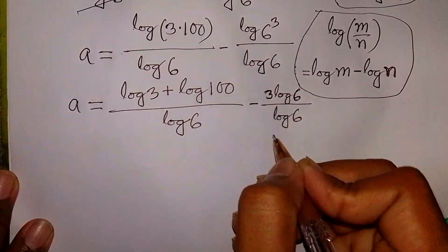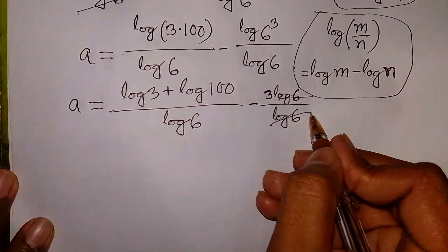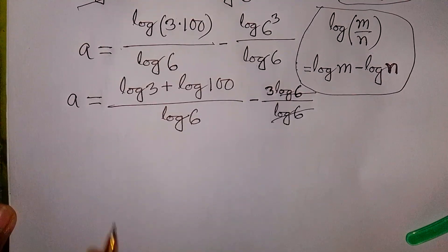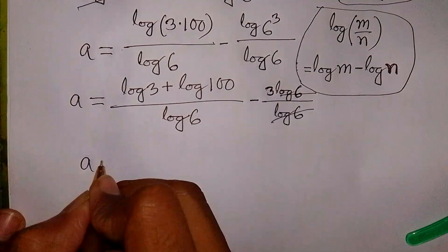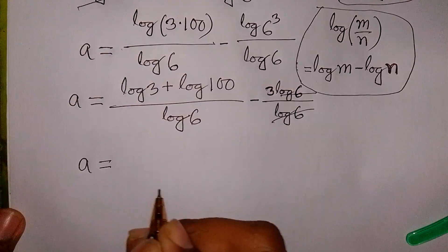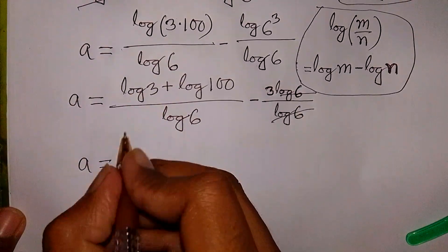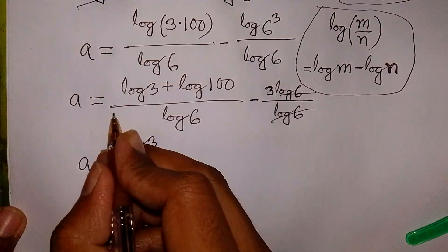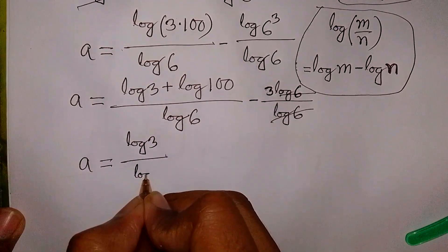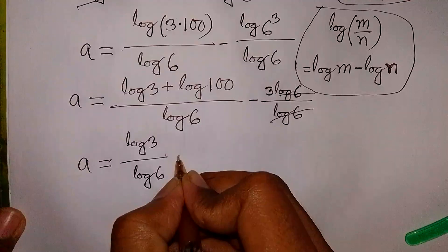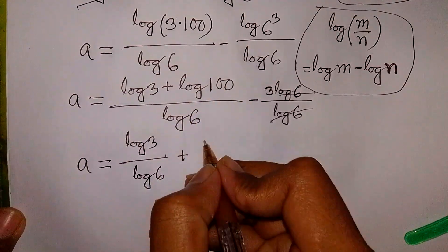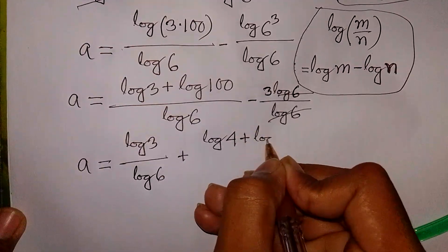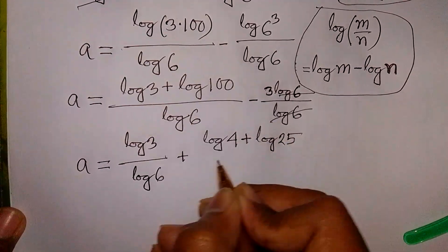So at this moment, log 6 cancels out. A will be equal to log 3 over log 6, plus log 100 over log 6, minus 3. Now log 100 can be written as log 4 plus log 25.